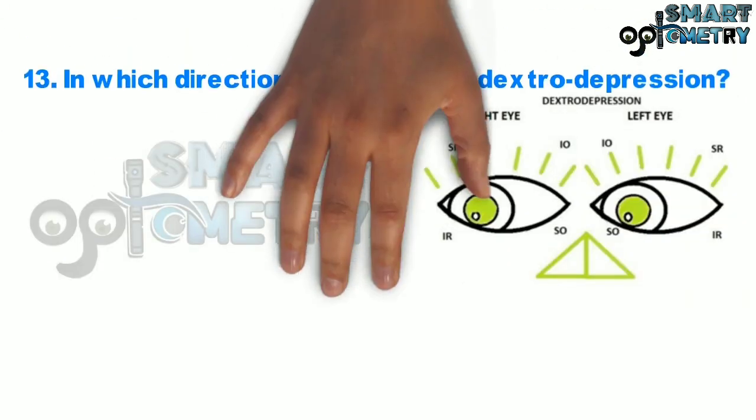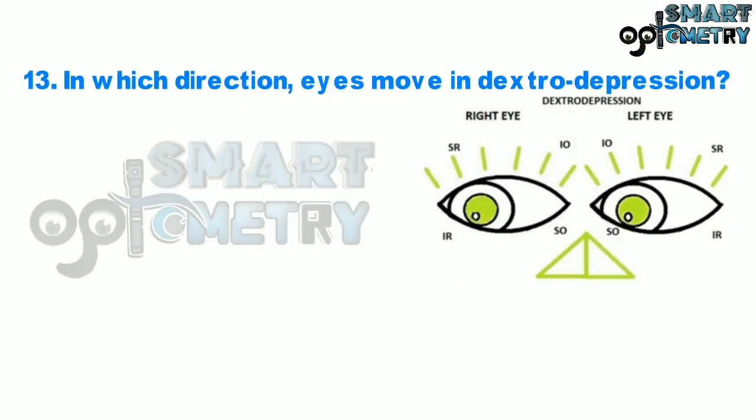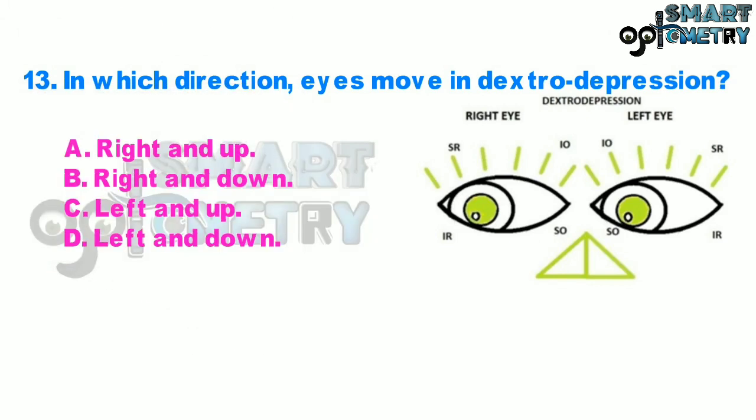Question 13. In which direction do the eyes move in dextrodepression? A. Right and up, B. Right and down, C. Left and up, D. Left and down.